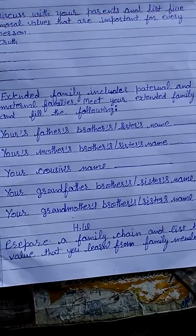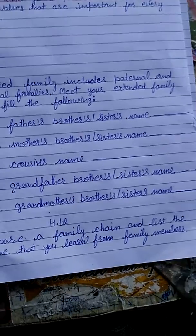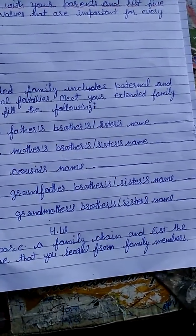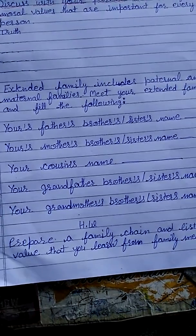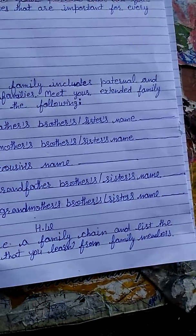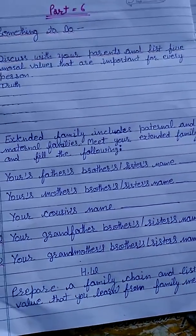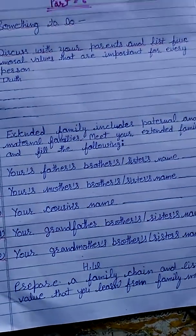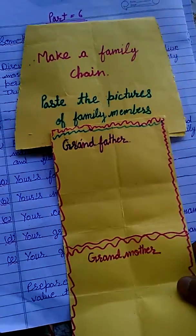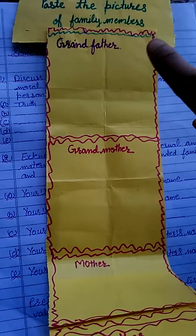For homework today: prepare a family chain and list the values that you learn from each family member. Make a family chain like this — paste the picture of family members. The first one is grandfather, and you write the value that you learn from grandfather.